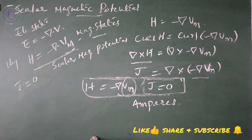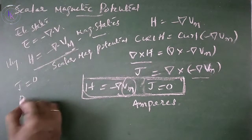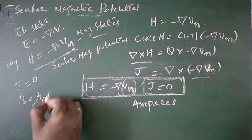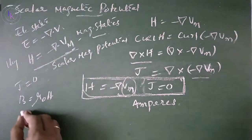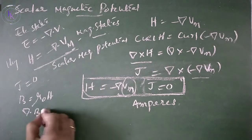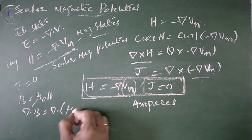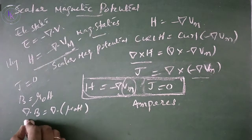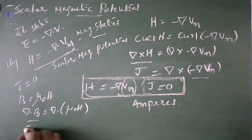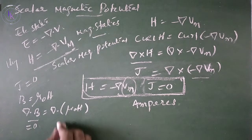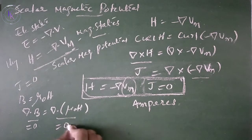Vm needs to satisfy Laplace equation. We have B equals mu naught H for free space. Then del dot B equals del dot mu naught H. But del dot B equals 0. Then this must equal 0.